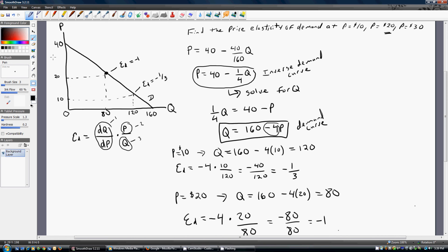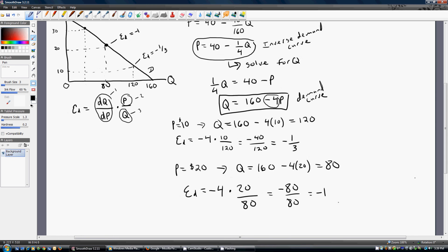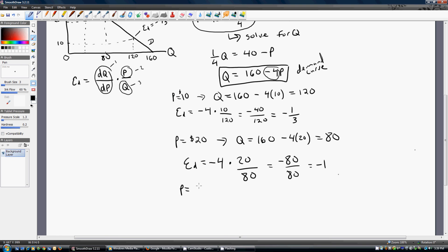So now let's find out what happens when price is $30. I'm going to plug $30 into the demand curve to see what happens. So when price is $30, the quantity demanded is 160 minus 4 times 30. So that's just 40. Going back to our elasticity of demand equation up here, we get minus 4 times the price of 30 divided by the corresponding quantity. We get minus 3.